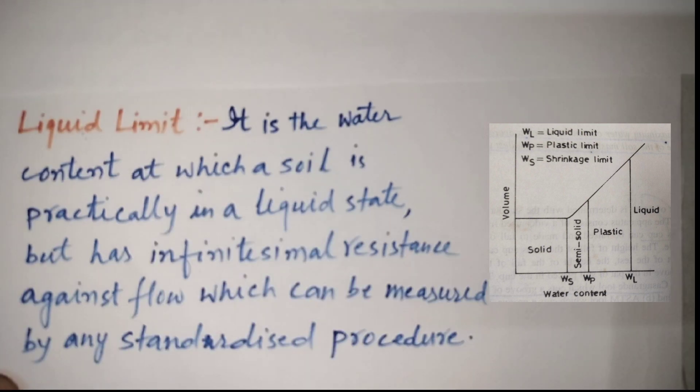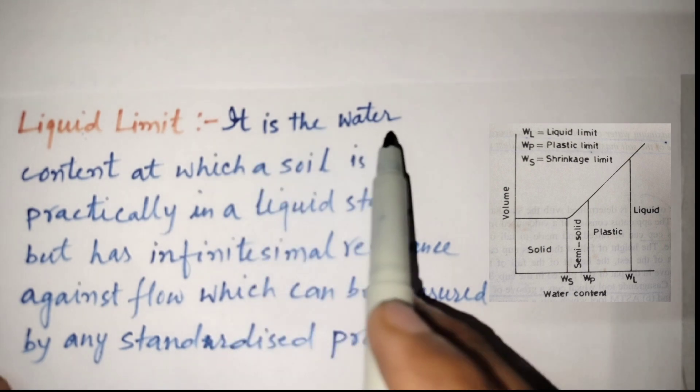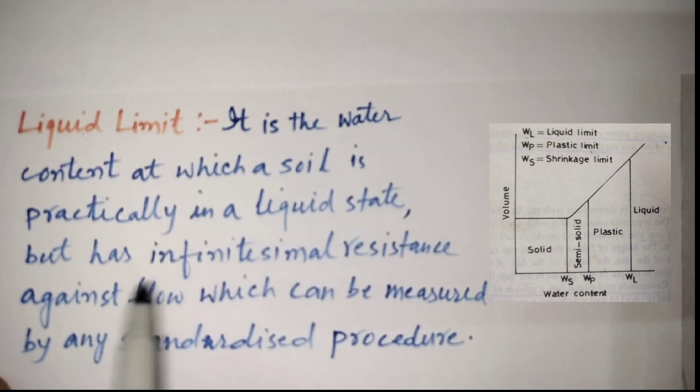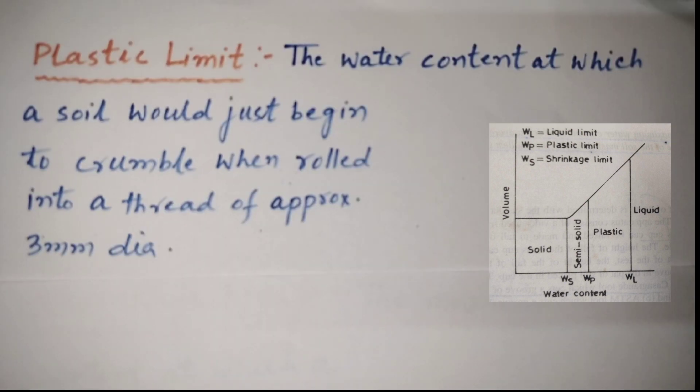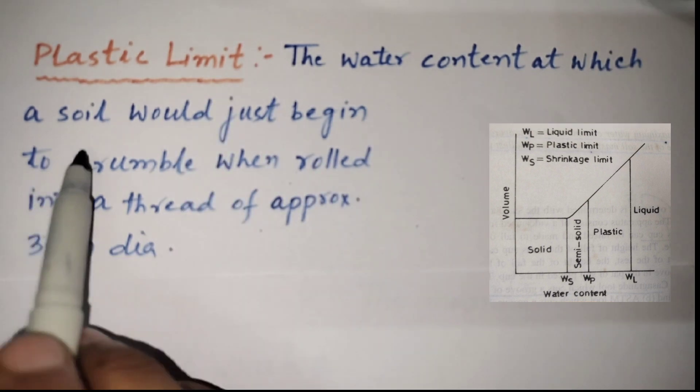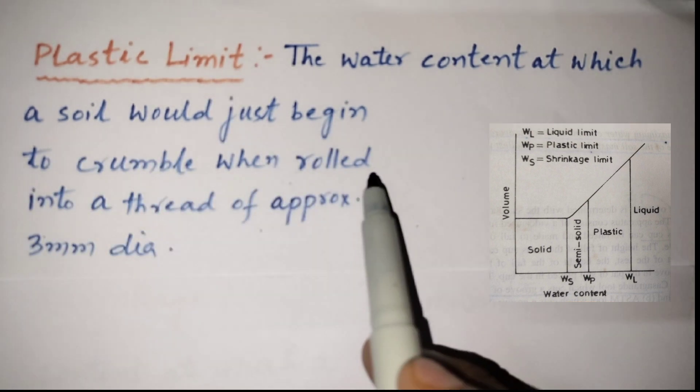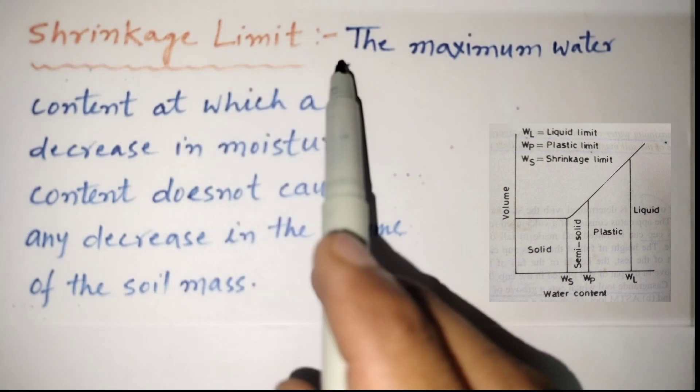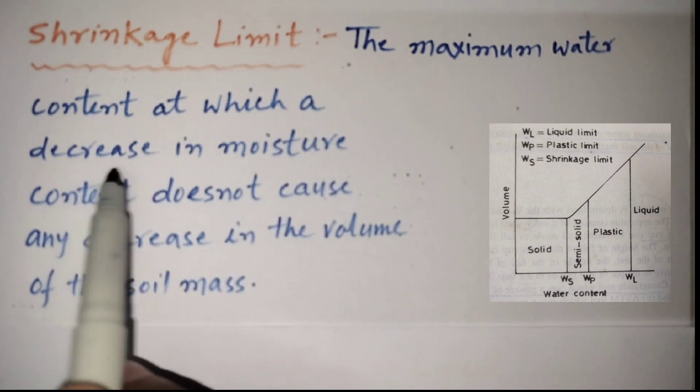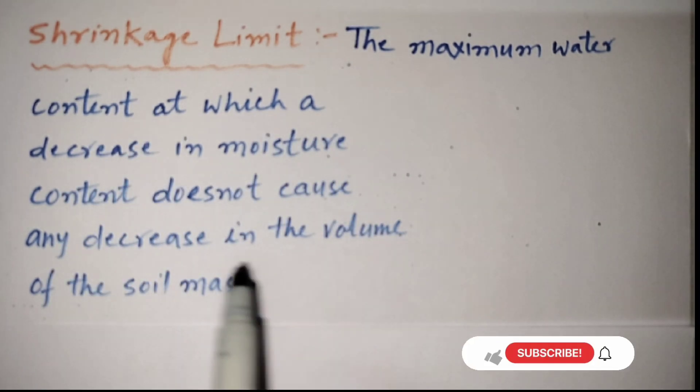Liquid limit is the water content at which a soil is practically in a liquid state but has infinitesimal resistance against flow which can be measured by any standardized procedure. Today, we will learn this standard procedure of determining the liquid limit. The water content at which a soil would just begin to crumble when rolled into a thread of approximately 3 mm dia is called plastic limit. Shrinkage limit is the maximum water content at which a decrease in moisture content does not cause any decrease in the volume of the soil mass.